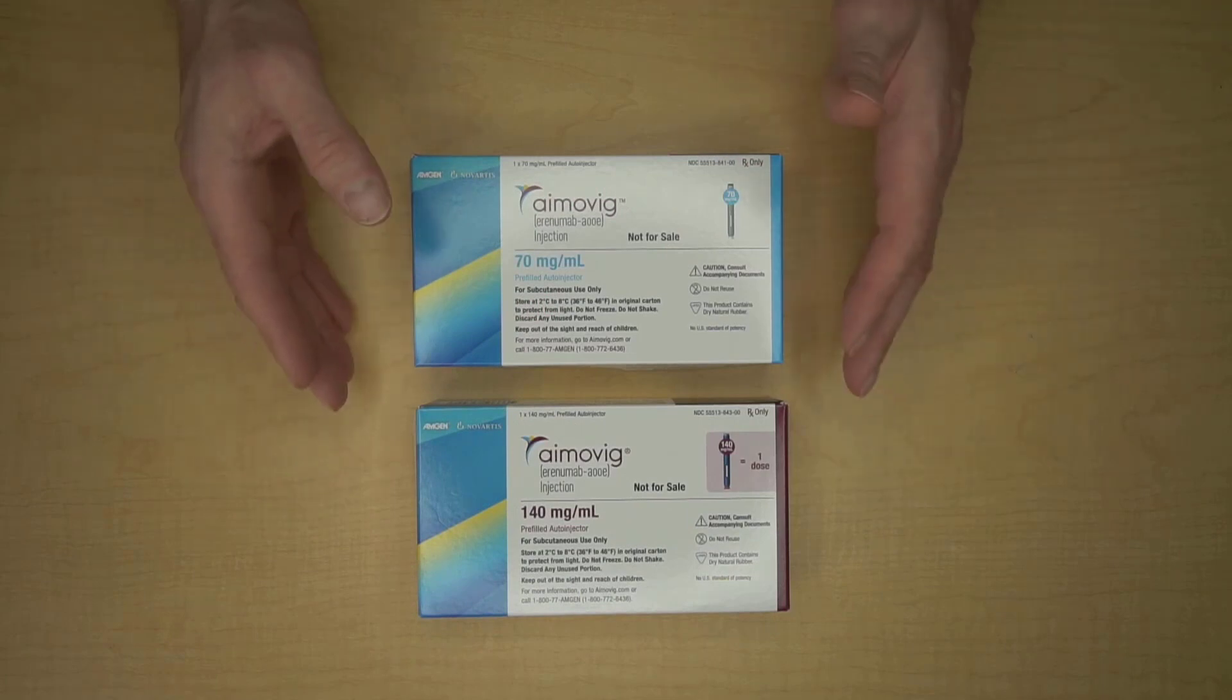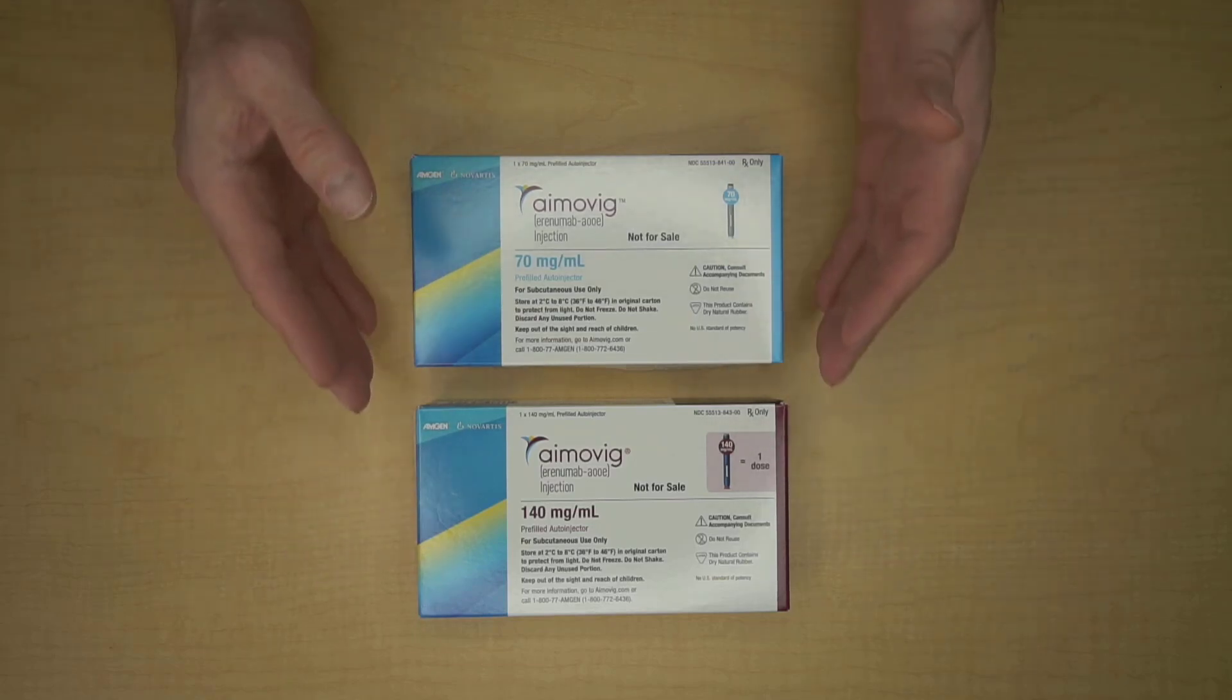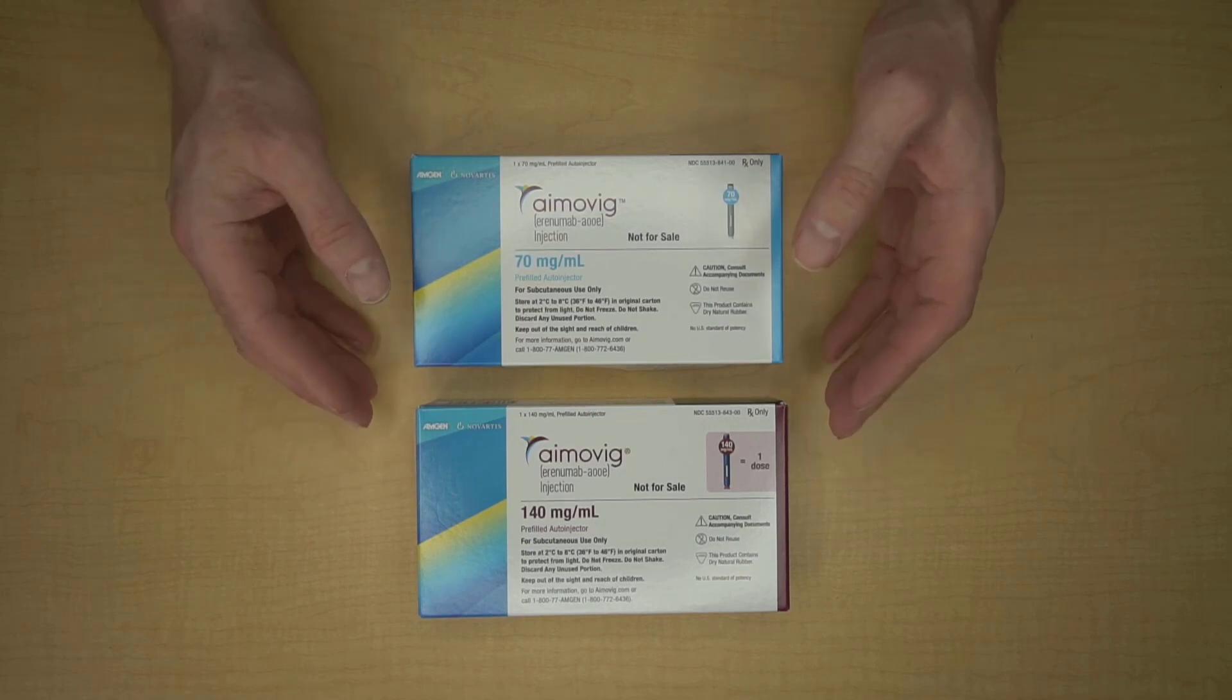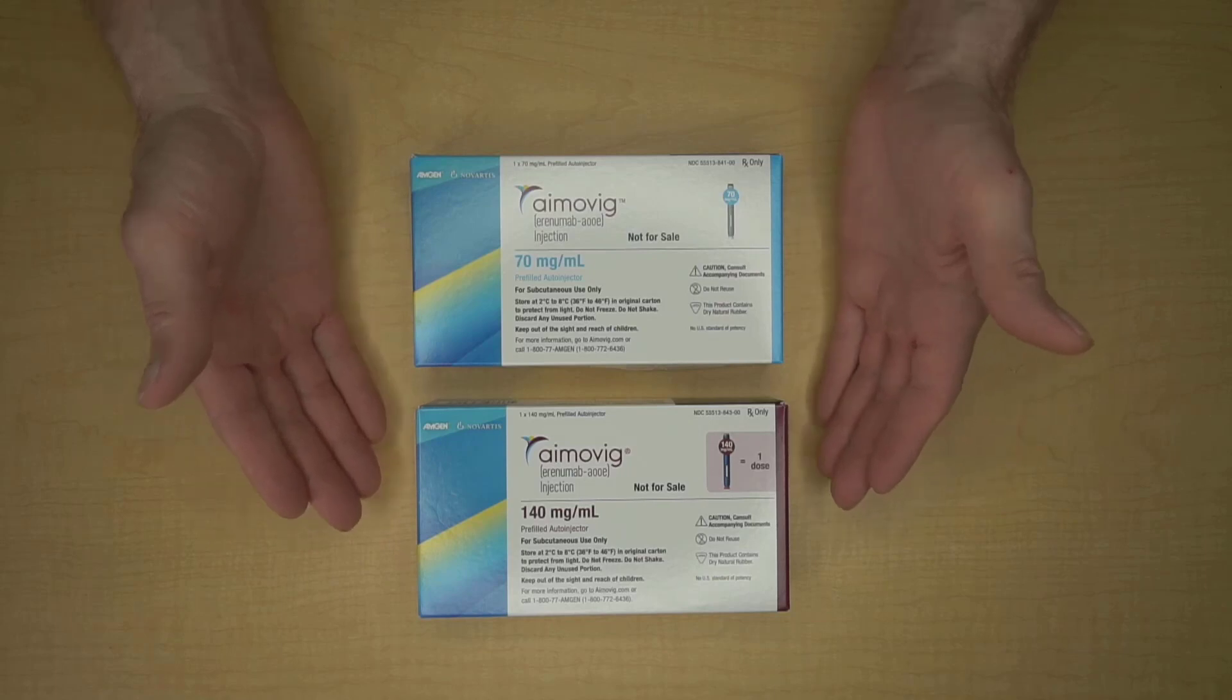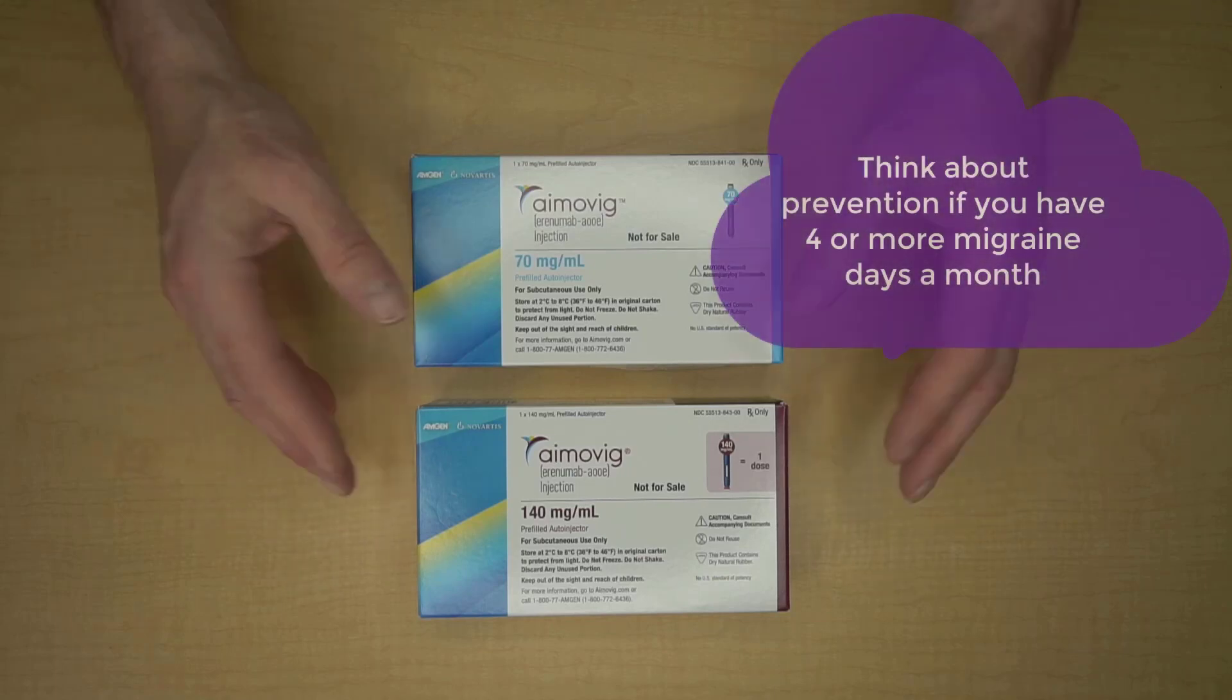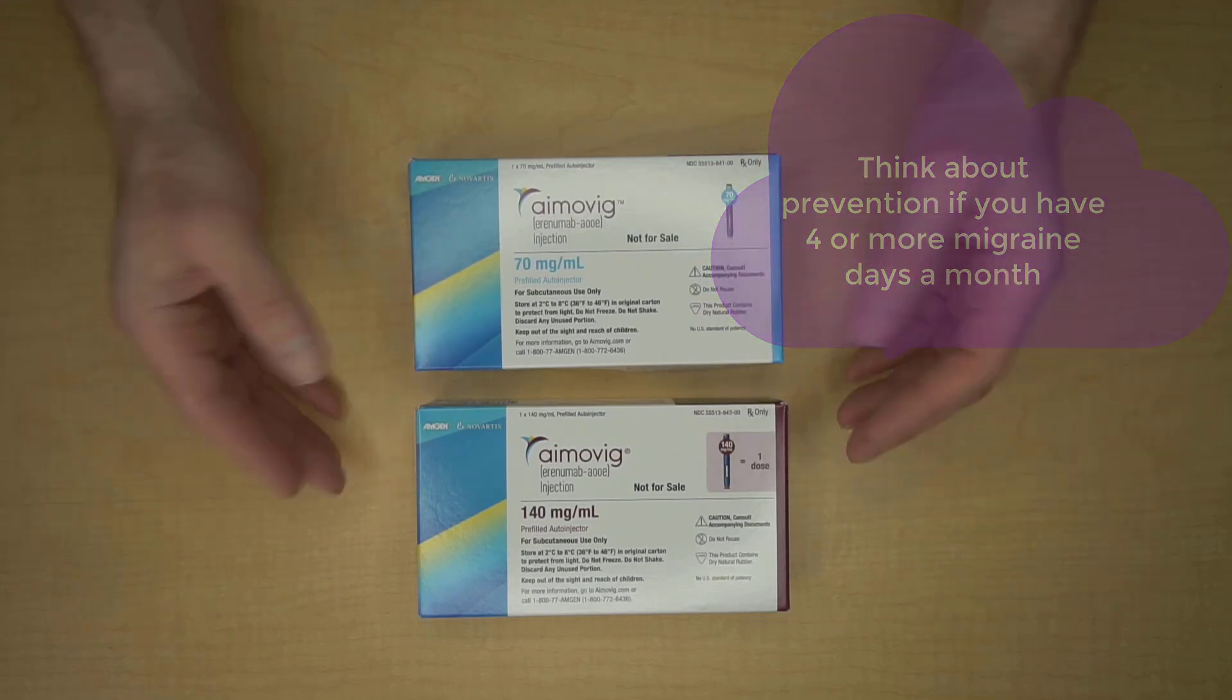So, while we're waiting for Amovig to come to room temperature, now's a good time to do a little recap of exactly what Amovig is. Amovig is a CGRP injection for the prevention of migraine in adults. And by prevention, what I mean is not a medicine that you take when you get a migraine, but a medicine that you take in order to have fewer migraines, make the migraines that you do have less severe, and make them respond better to acute treatments, which are the medicines you take when you get a migraine.